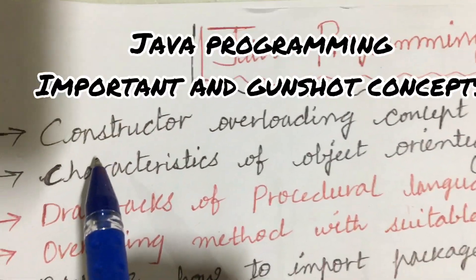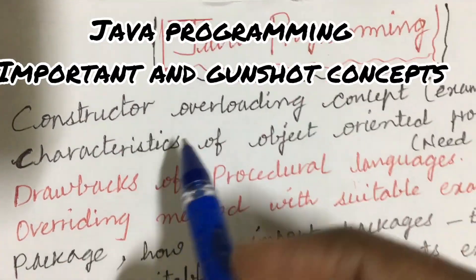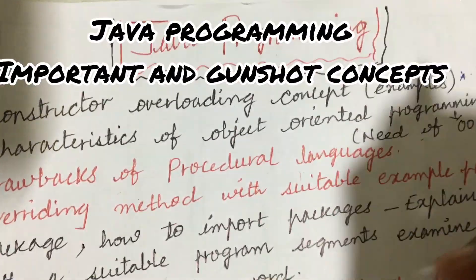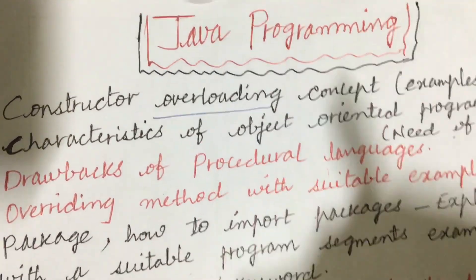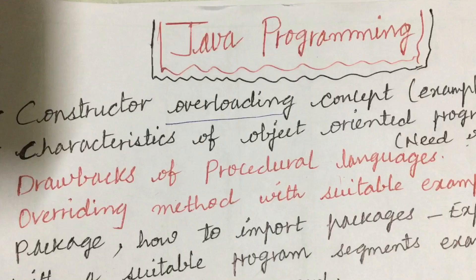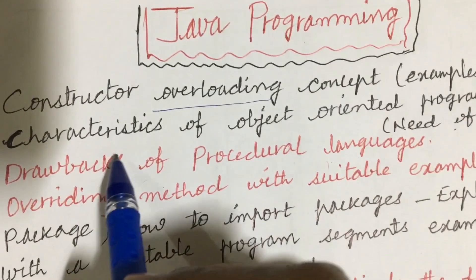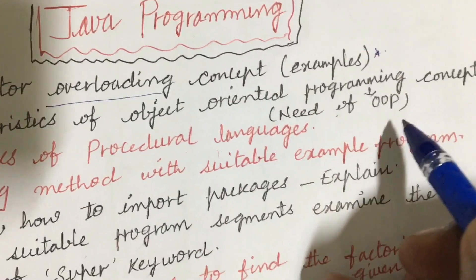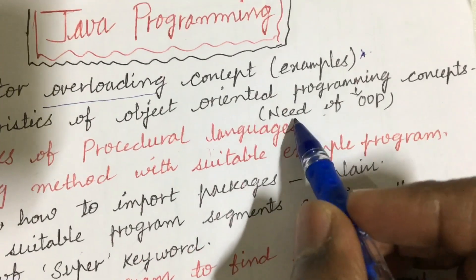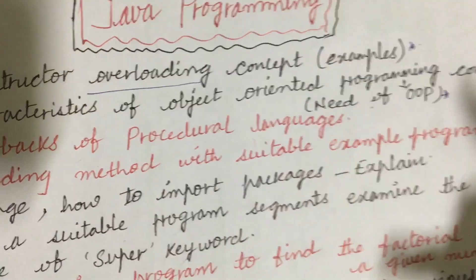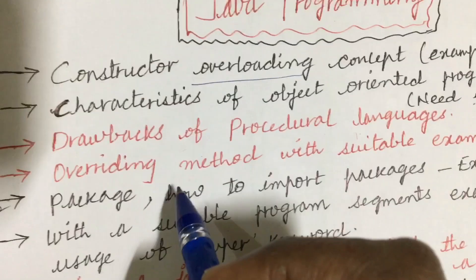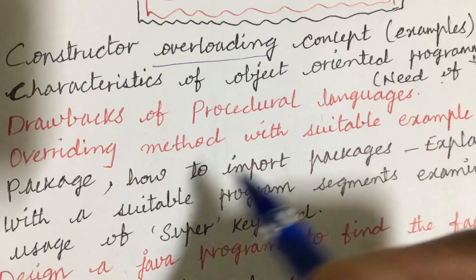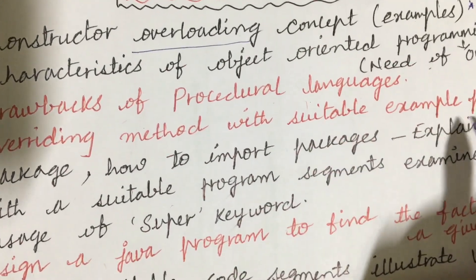The first and foremost important question I can give you is: explain the constructor overloading concept along with its example. The concept of overloading is a key question you can expect. Also: what are the characteristics of object-oriented programming, the need for OOP, drawbacks of procedural languages, and overriding method with a suitable example.